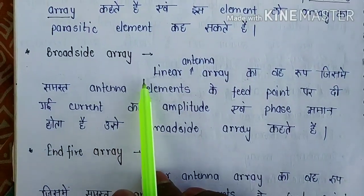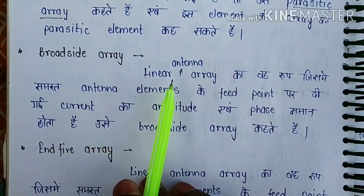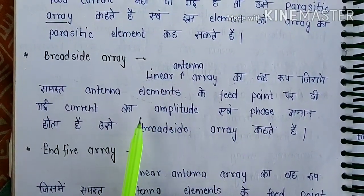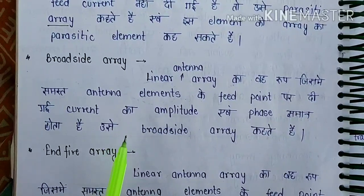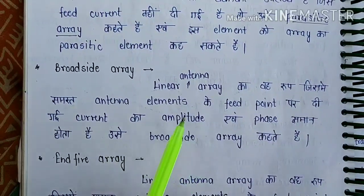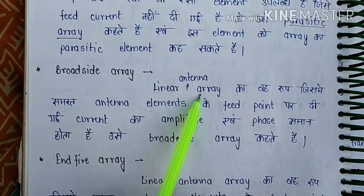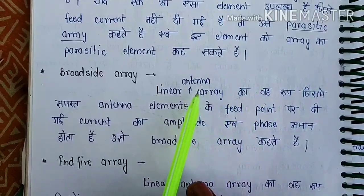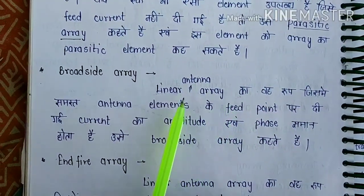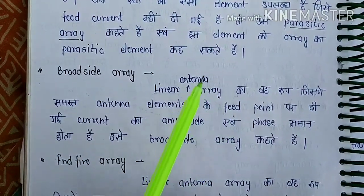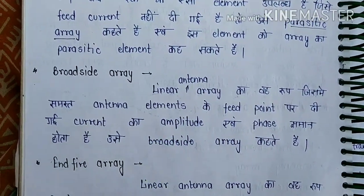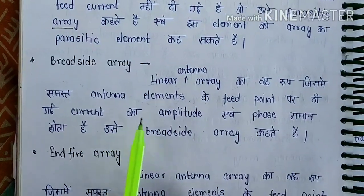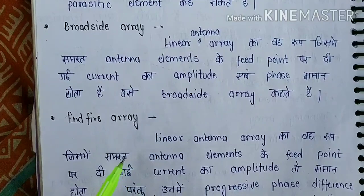Next is the broadside array. The broadside array is a linear antenna array. In this type of antenna array, the elements are arranged such that the main radiation is perpendicular to the axis of the array. This type of antenna array is called a broadside antenna array.